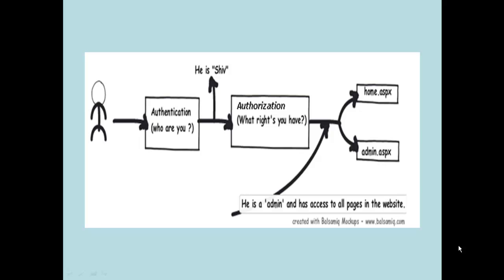The second step is: once you know that the user exists in your database, you check what kind of rights the user has — in other words, for what kind of modules does this user have access, or what kind of access does the user have to your application. The first step, where you check if the user is existing in your database, is called Authentication. The second step, where you check what kind of rights the user has, is called Authorization.